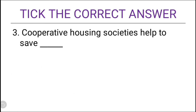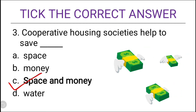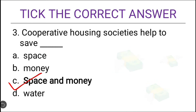Third question: cooperative housing societies help to save — options are space, money, space and money, or water. The correct answer is both space and money, because cooperative housing societies not only save space but they also save money. That's why option C is the correct one.